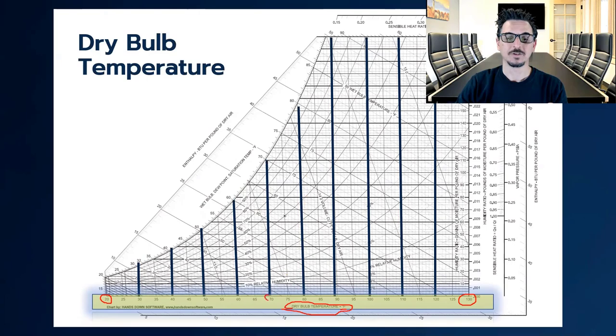When we plot these lines on the psychometric chart, you can see that they go vertical. So if we follow 70 degrees here, anywhere on the chart on this particular line it's always 70 degrees. It doesn't change the temperature.